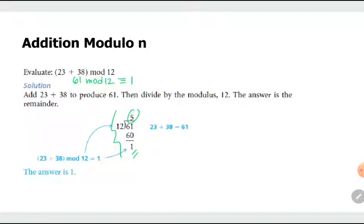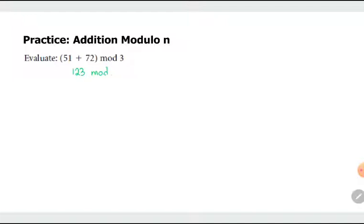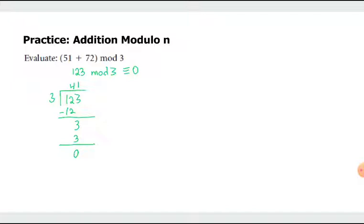Here's another example: 51 plus 72, solving in modulo 3 arithmetic. 51 plus 72 is 123. We divide 123 by 3, and 3 goes into 123 exactly 41 times with a remainder of 0. So 123 modulo 3 is equivalent to 0. That's how you perform addition in modular arithmetic.